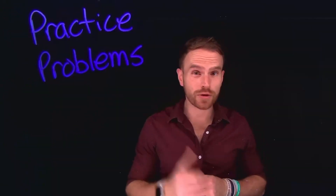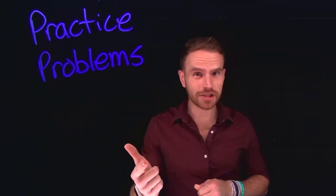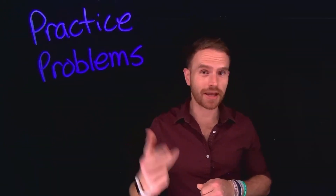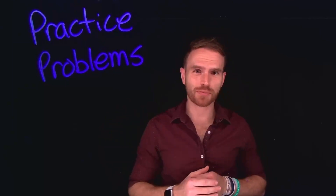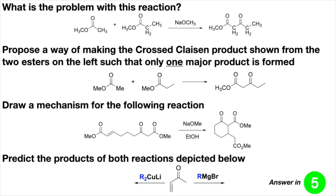Now that we've reviewed Claisen condensations, alkylation of the alpha position, and Michael additions, let's try some practice problems to gauge your understanding. Pause the video, try these problems independently, then resume the video to check my answers.